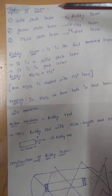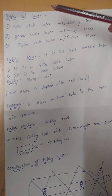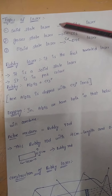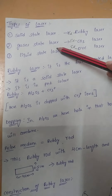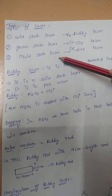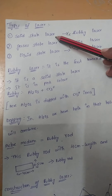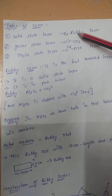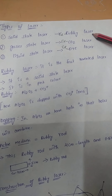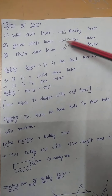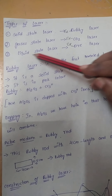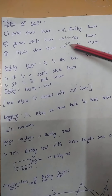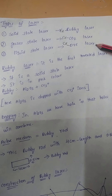There are some types of laser. Those are solid state laser, gas state laser, and liquid state laser. For solid state laser, we have the example of ruby laser. For gas state laser, the example is CO2 laser. And for liquid state laser, the example is dye laser.